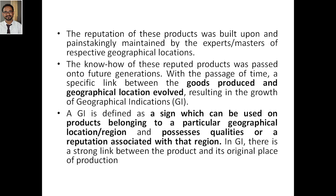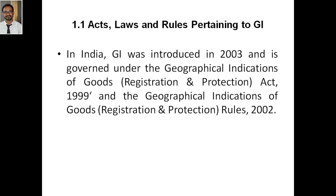GI can now be defined as a sign which can be used on a product belonging to a particular geographical location or region. It can be a sign, tagline, or any information that represents a particular location or region and possesses qualities or a reputation associated with that region. In geographical indication there is a strong link between the product and its original place of origin.